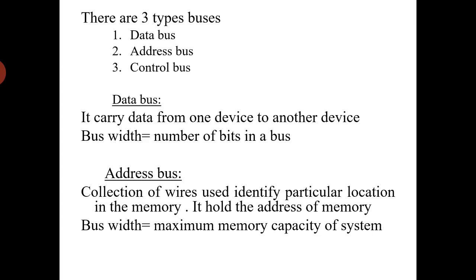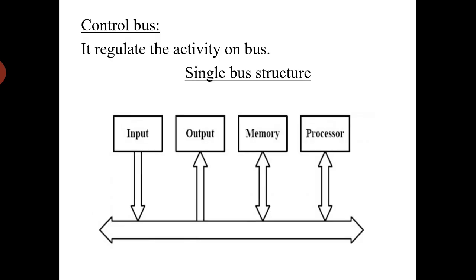The third type is the control bus. The control bus regulates activity on the bus — it controls both the address bus and the data bus, similar to how the control unit controls the remaining functional units of a system.